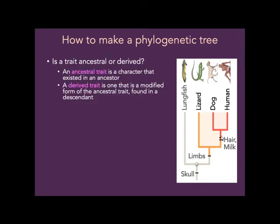One question we often ask is whether a trait is ancestral or derived. An ancestral trait is a character state that existed in the ancestor. A derived trait is a modified form of the ancestral trait — you find it not in the ancestor, but in a descendant of that ancestor.